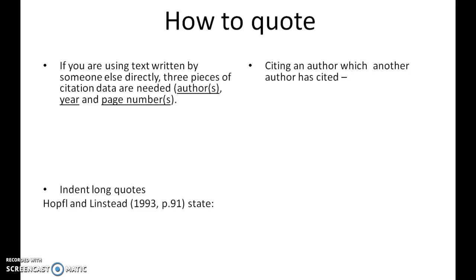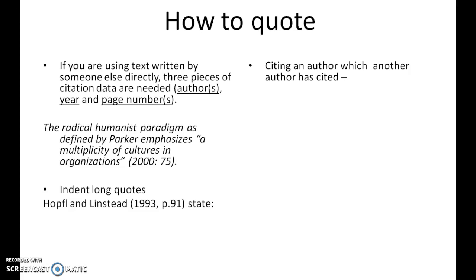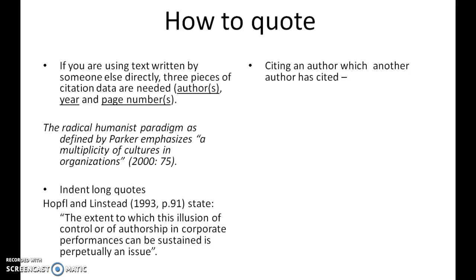Quoting is different from citing. If you're using text written by somebody else directly, three pieces of citation data are needed: the author or authors, the year, and the page number or page numbers. For example, Parker is the author named within the text, so you refer to the year 2000 on page 75. When you have a long quote of more than 40 words, you should indent it to make it stand out from the rest of the written text. There's an example of this in the document available from the eprints directory.